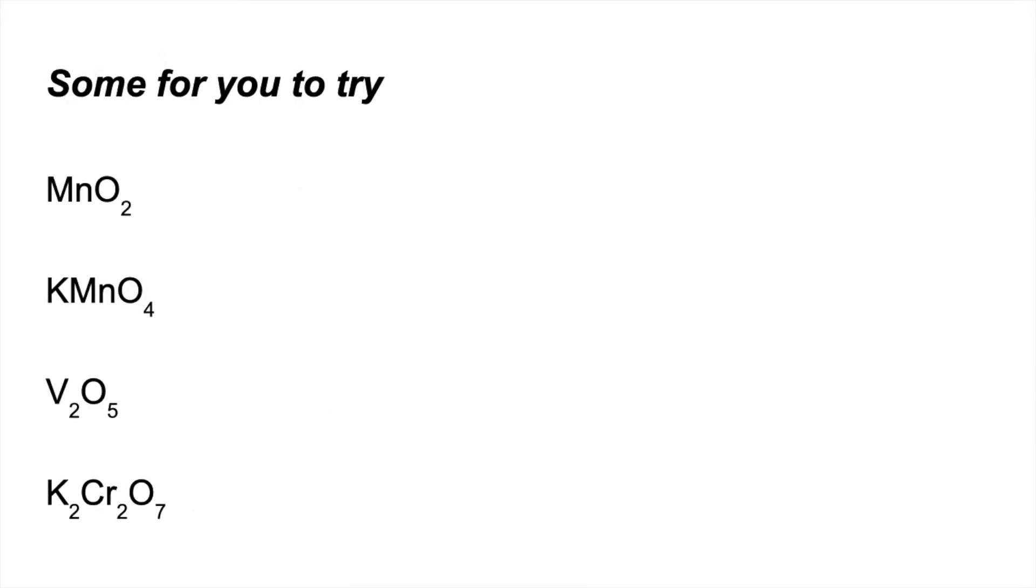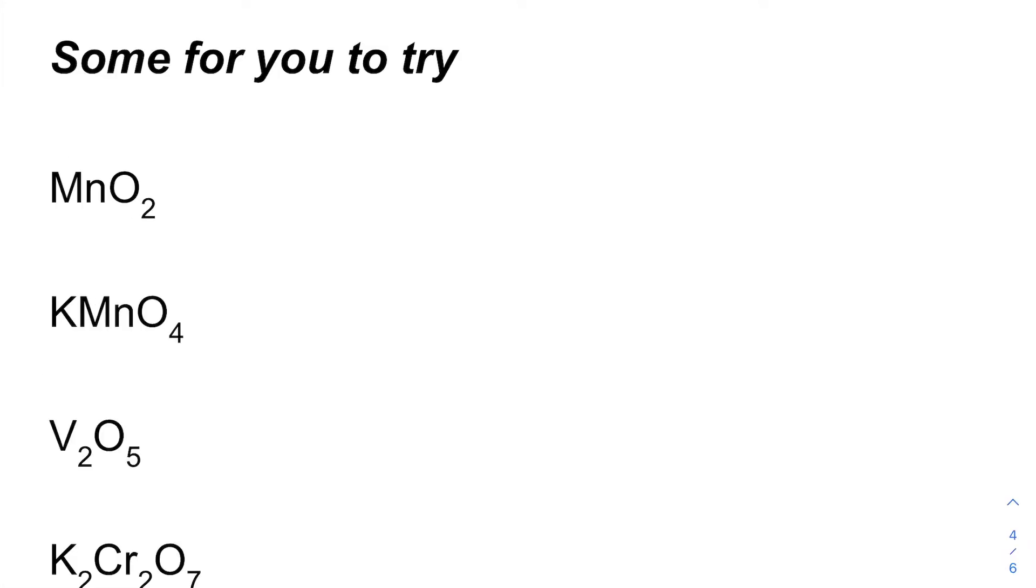So there's four for you to try. If you want to pause the video and then play on when you're ready for the answers. The first one, so we've got these two oxygens, minus two for each of those. So to keep this thing neutral, the manganese has to be in the plus four oxidation state. So that oxide is called manganese(IV) oxide.